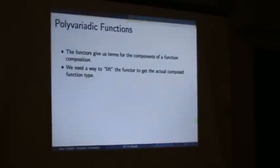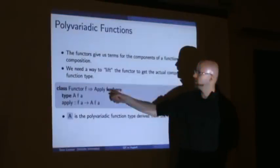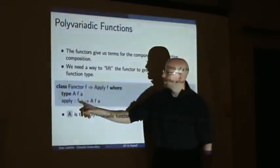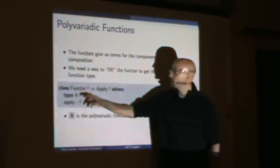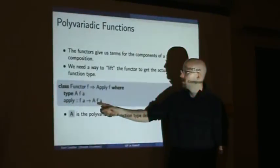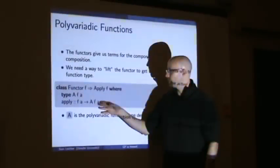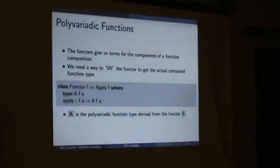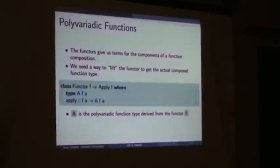We need a way to lift the functor so that you get the actual composed function type — that's how we get our type safety at the end. So we need a type class Apply, parameterized by F, where F has to be a Functor. We have a type family A. And the apply function lifts this functor to another level: given this functor, we can create something of type A that's also parameterized by F and another A. Whenever we give an instance, we give a definition for apply and the associated type synonym A. A is going to represent our polyvariadic function.